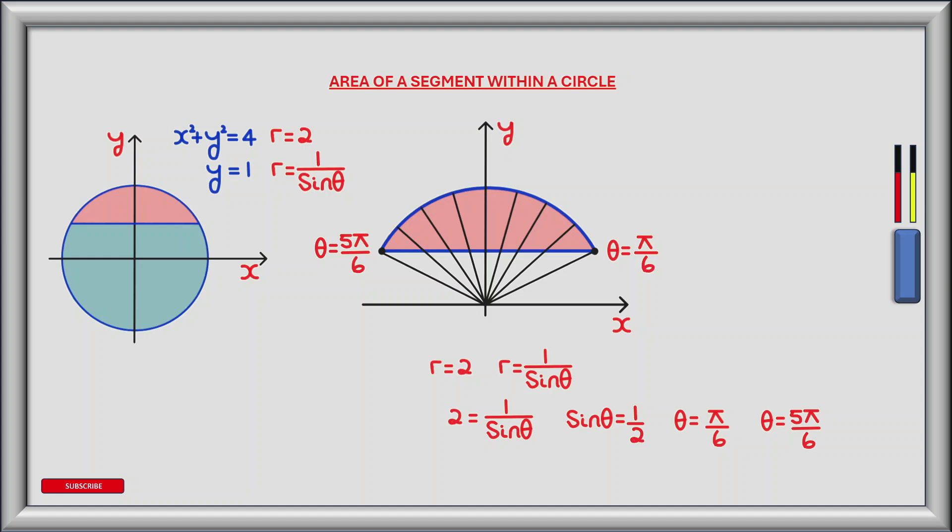As this is a symmetrical shape, we could just consider the area from theta equals pi by 6 to theta equals pi by 2 and double it to get the total area. However for this exercise I'm going to consider the total area, so that's where theta equals pi by 6 to where theta equals 5 pi by 6. Have a go at the first option — where theta rotates from pi by 6 to pi by 2 — and let me know in the comments section what answer you get.